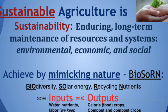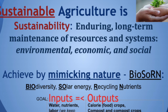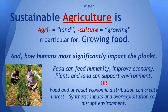Another way to think about this is looking at our inputs and outputs — are we taking too much out of the bank of our farm, the nutrients and so forth? We actually keep track of that. Moving on to the other part of our class name: agriculture. You can break it down — agri means land and culture means growing. So agriculture is growing food.